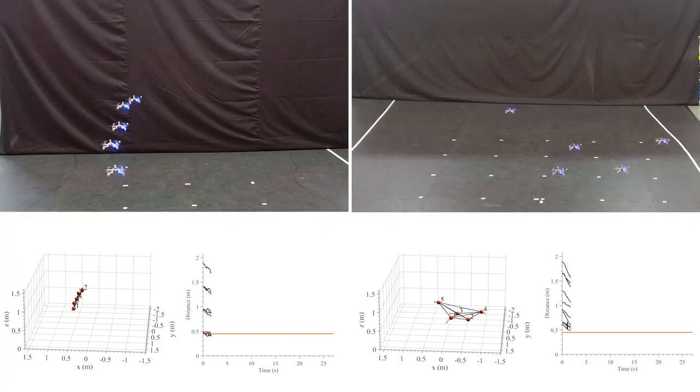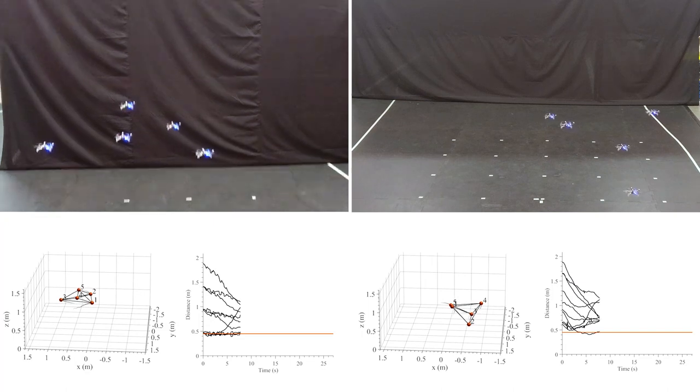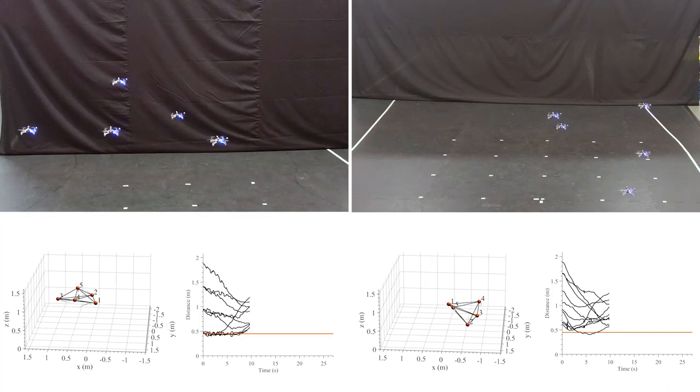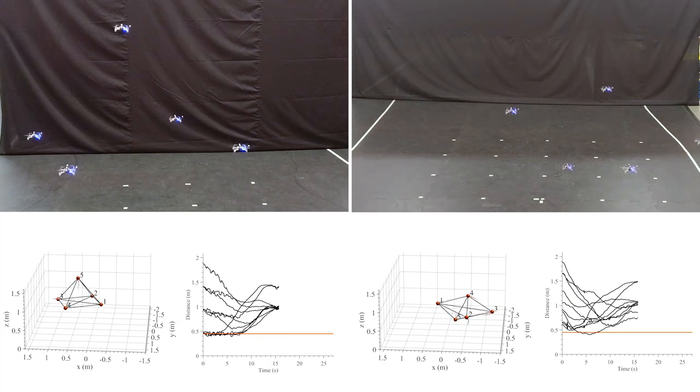In the first set of experiments, we consider a square pyramid desired formation with five agents. The agents initially hover at an altitude of 50 centimeters before executing the control strategy. The onboard flight controller of each quadrotor is responsible for moving the vehicle along the desired direction.